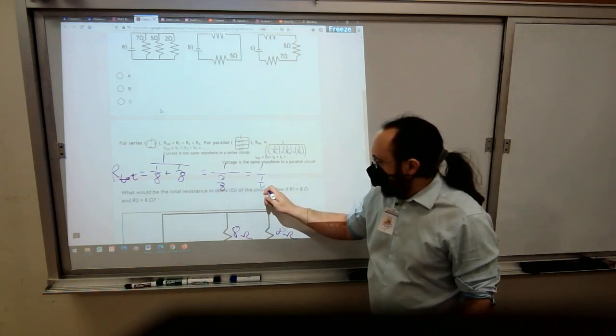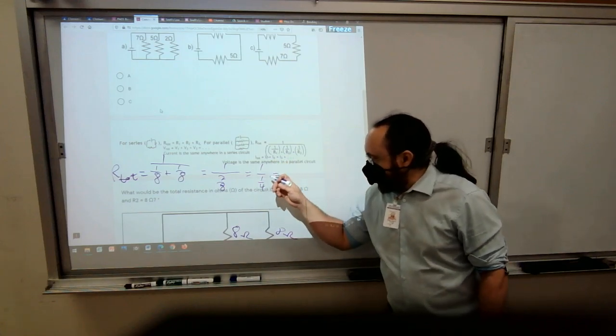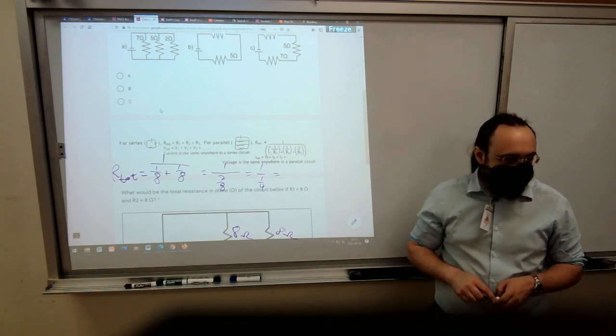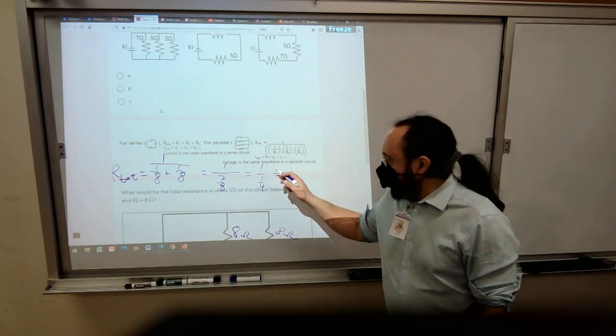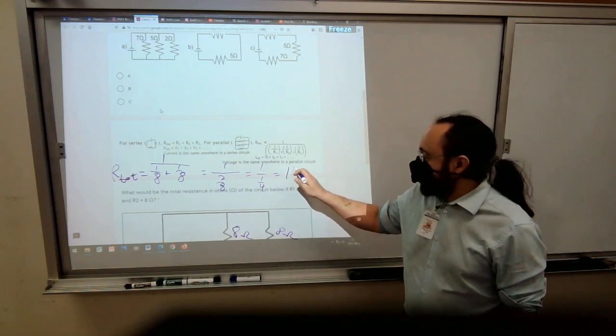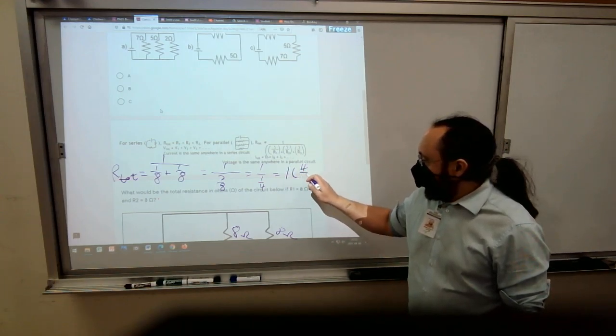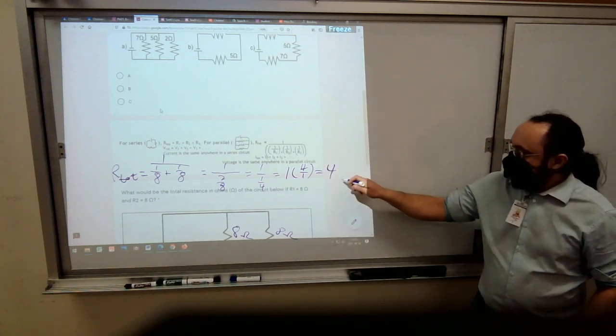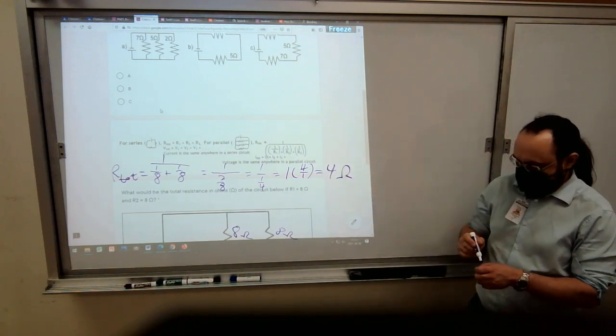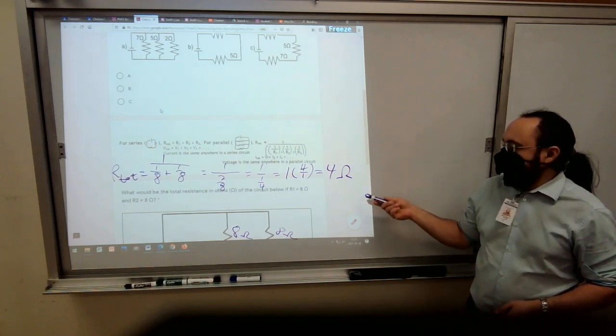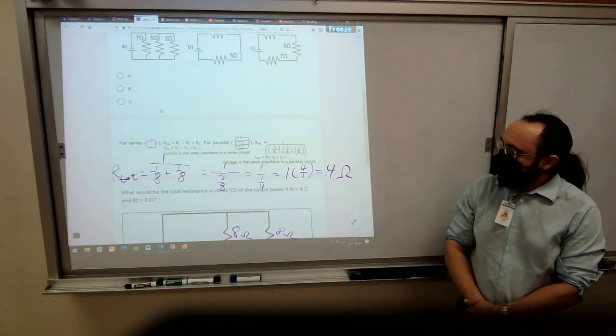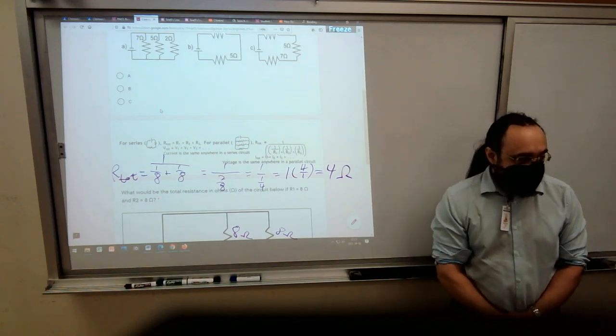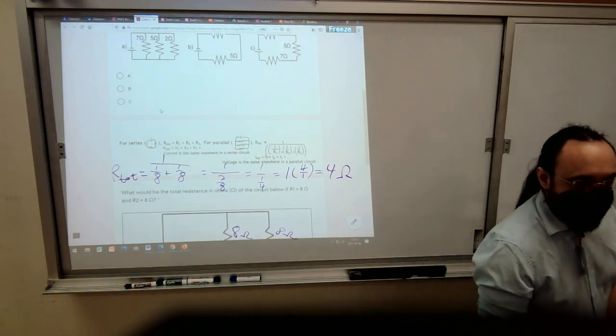You could either say one divided by a fourth is four, because the fourth goes into one four times, or you could say divided by a fraction is the same as multiplying by a reciprocal. So one times four over one is the same as one times four, and that's four ohms. My ohms look like ours, but they're really ohms. This one's on the CTBA number four, which is on April 20th. Come to school ready to take the CTBA.